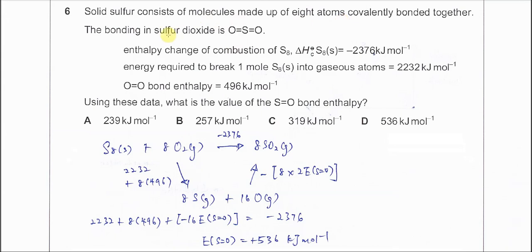The bonding in sulfur dioxide is O=S=O. Enthalpy change of combustion of S8 is -2376 kJ/mol. Energy required to break 1 mole of S8 into gaseous atoms is 2232 kJ/mol. The O=O double bond is 496 kJ/mol.